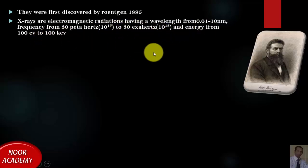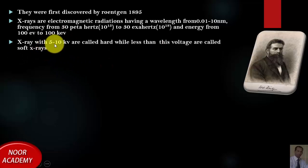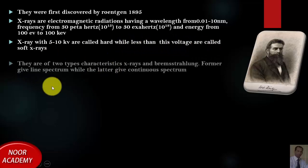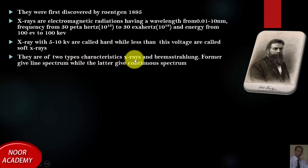X-rays with 5 to 10 kilovolts are called hard, while less than this voltage are called soft X-rays. They are of two types: characteristic X-rays and bremsstrahlung. The former give line spectrum while the latter give continuous spectrum.